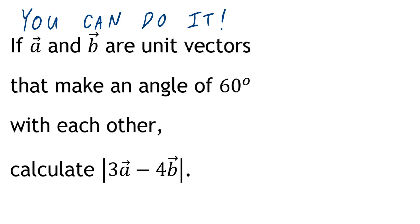Hi everyone, let's take a look at the following example. If vector A and vector B are unit vectors that make an angle of 60 degrees with each other, calculate the magnitude of 3 times vector A minus 4 times vector B.